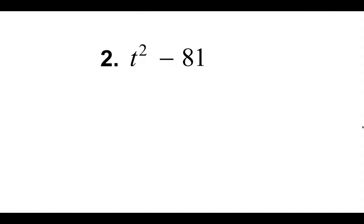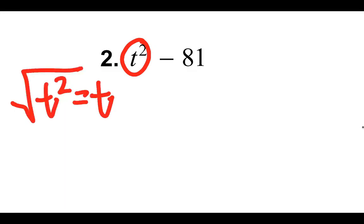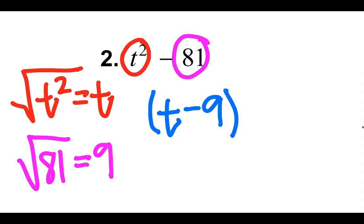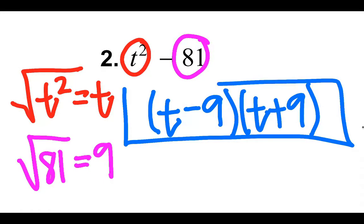You just take the square root of both parts and then do one binomial where you're subtracting them and one binomial where you're adding them. So if we look at the second one — t squared — the square root of t squared is t. And then square root of 81 is 9. So then I take t minus 9 times t plus 9, which gives me my two binomials that equal t squared minus 81.